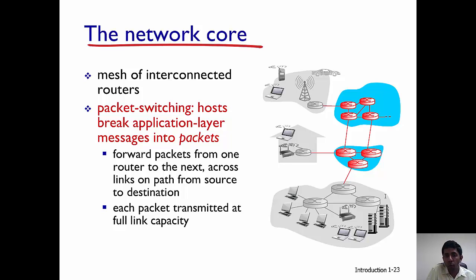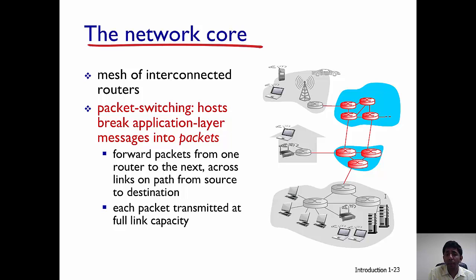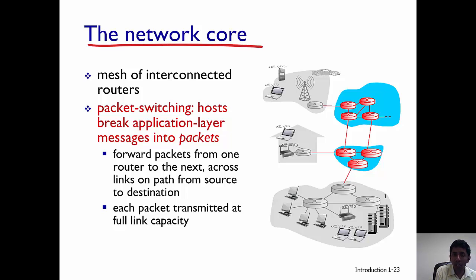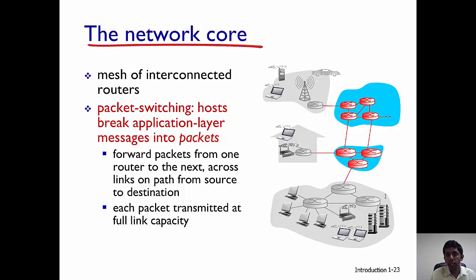For example, let's consider that through your phone you're trying to access the website of google.com. The server of google.com is going to serve you the requested data, but it's going to divide this high-level application layer message into smaller network-level packets. These network-level packets are then going to traverse the internet and move from the server of google.com to the client, which is your phone. What these routers do is forward packets from one router to the next such that the packet moves closer to the destination.